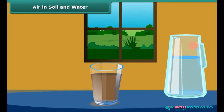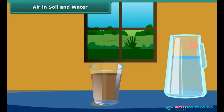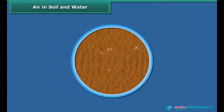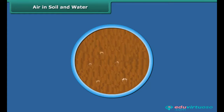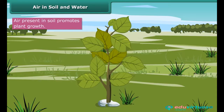Take some soil in a glass and add water to it slowly. Do you see bubbles forming in the soil? What is the reason for the formation of bubbles? Soil contains air between its particles. When water is added to soil, air is replaced by water, and as a result, bubbles are formed. Air present in soil promotes plant growth as well.